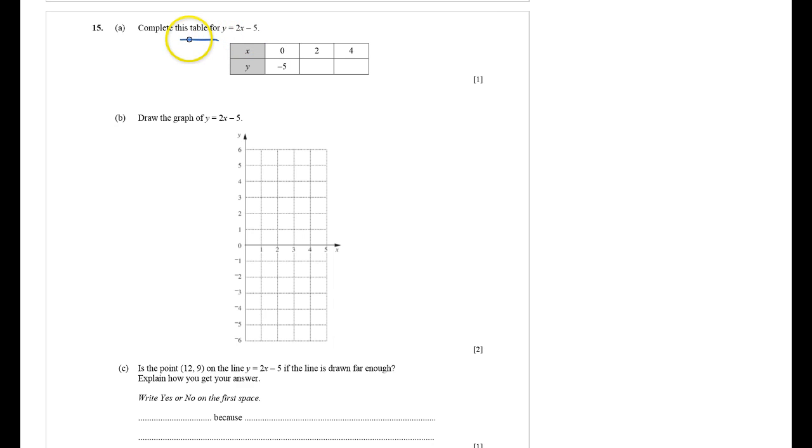Okay, so I've got to complete the table for y equals 2x minus 5. If x is 2, two 2's are 4, take away 5 is minus 1.